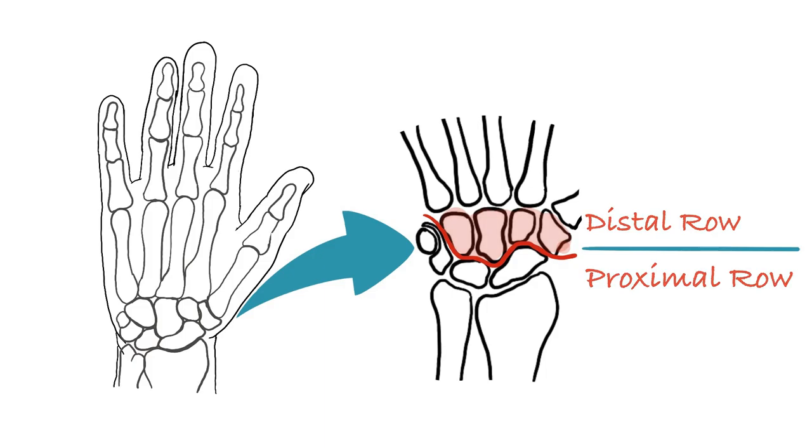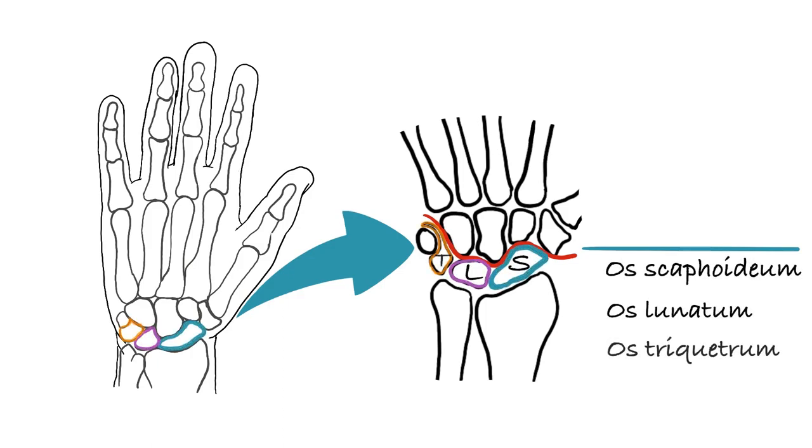Bones in proximal row from thumb to pinky finger on palmar side of the hand are os scaphoideum, os lunatum, os triquetrum, and os pisiforme.